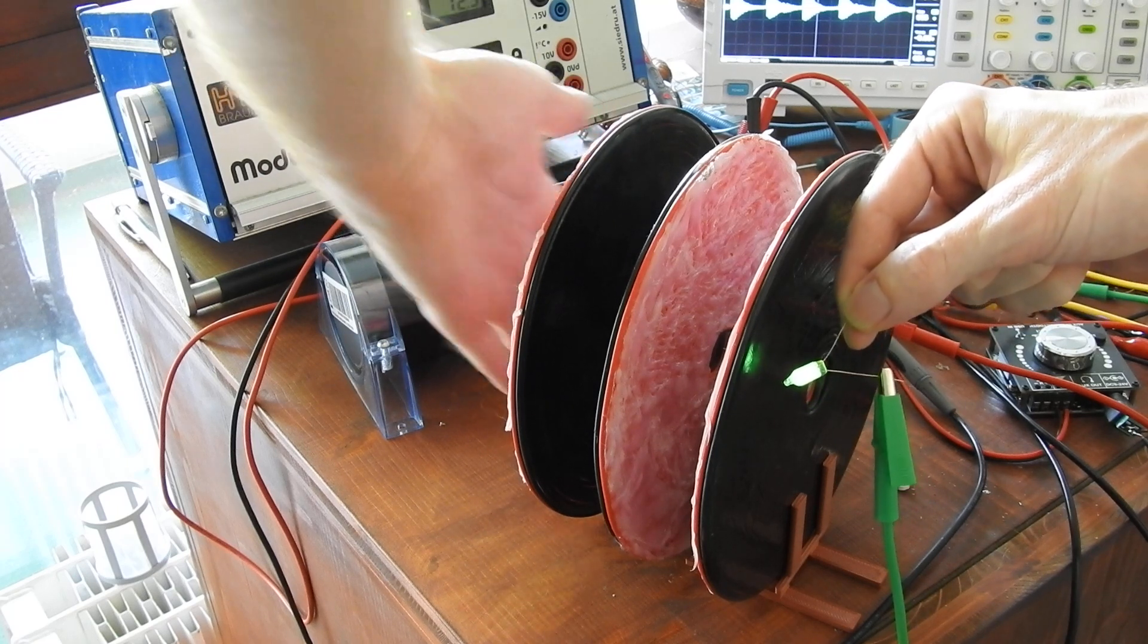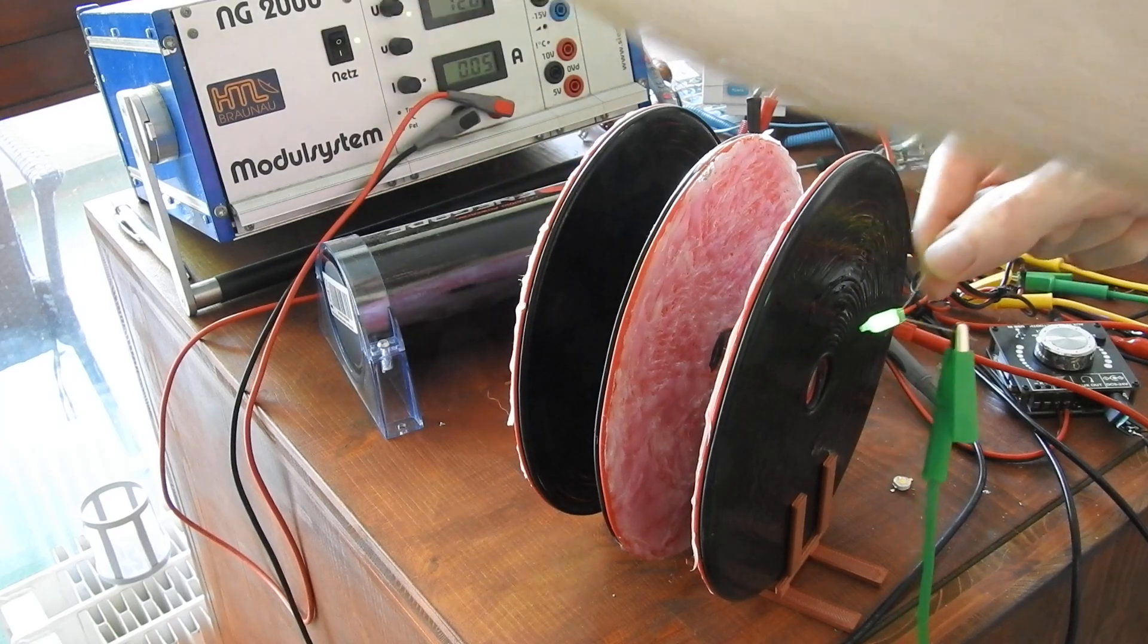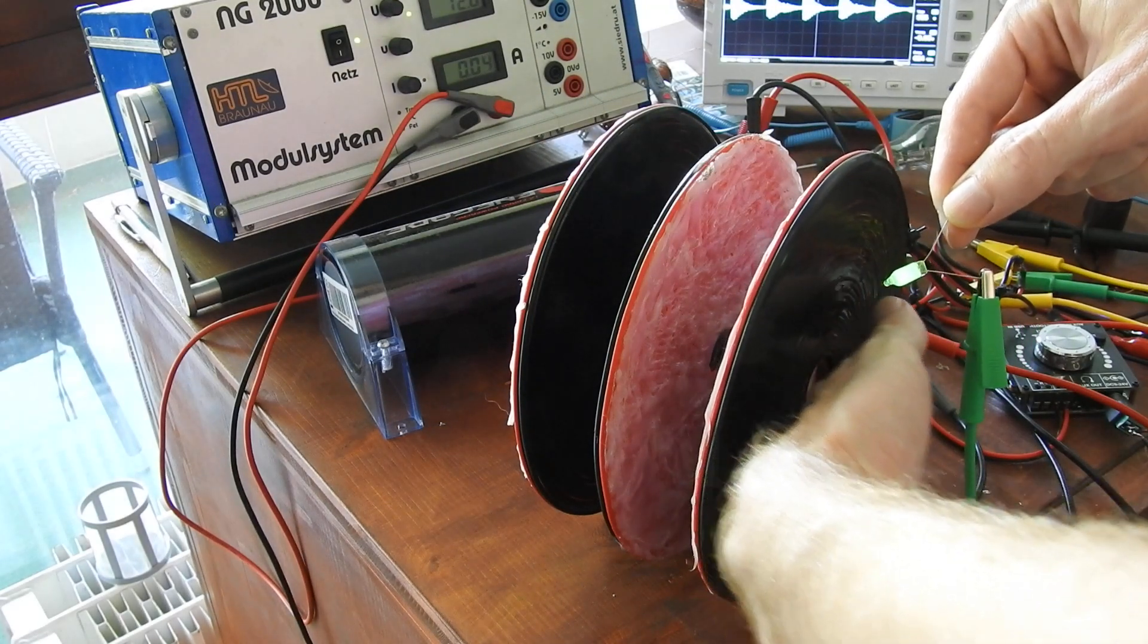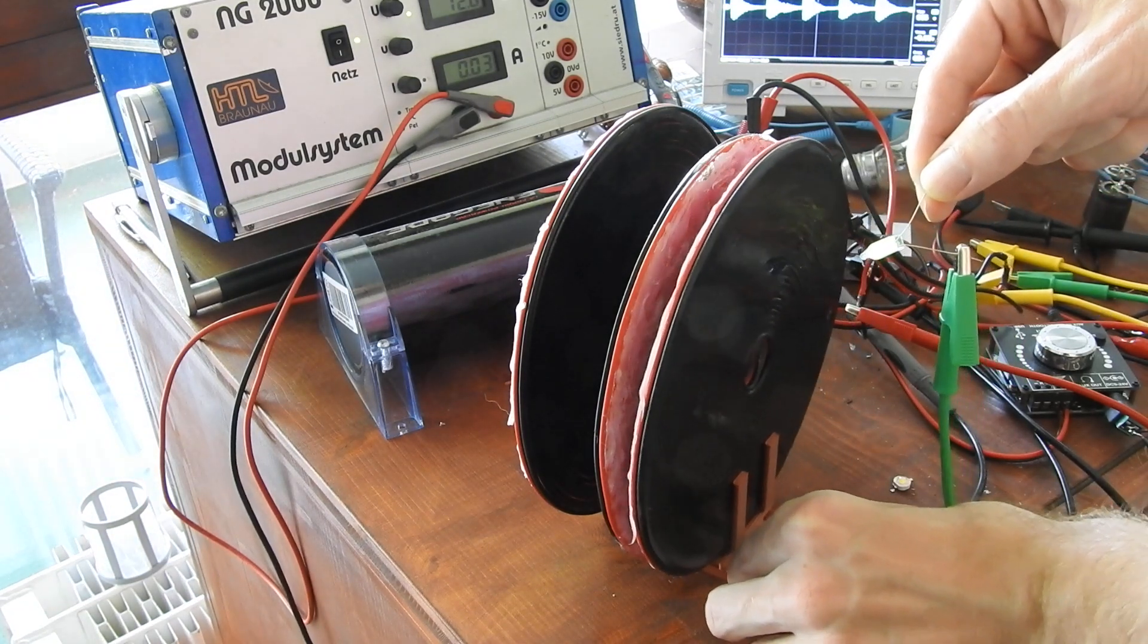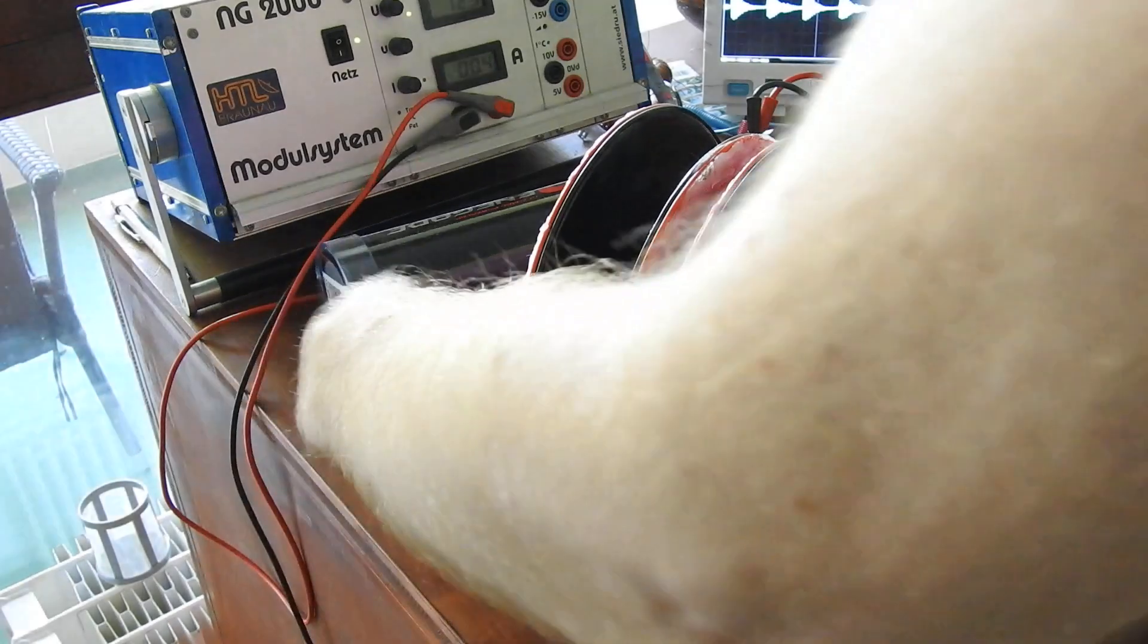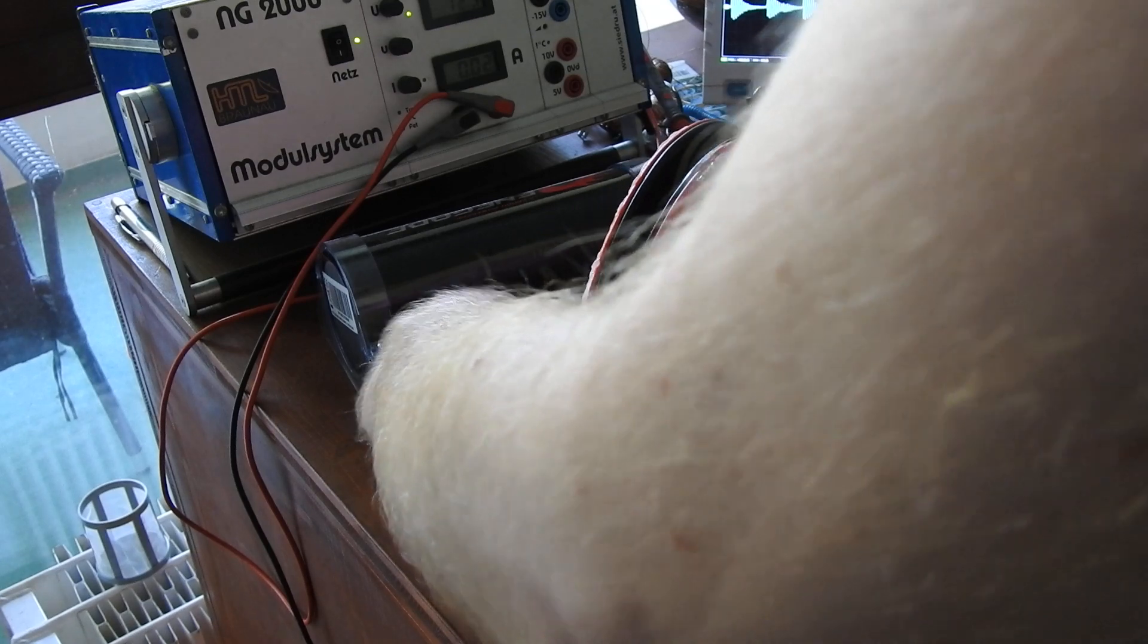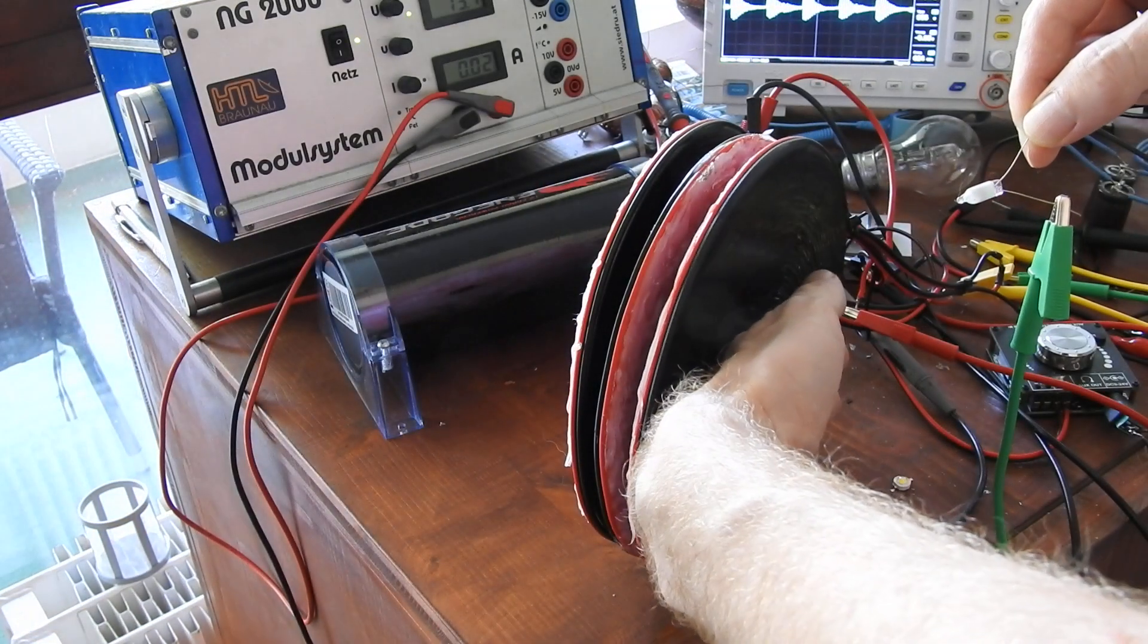It gets brighter when I do this, when I place my hand on this side. So my body is conducting the electricity. And if I come closer here, it gets weaker. Same goes for here. And I place them tighter together. And gone.